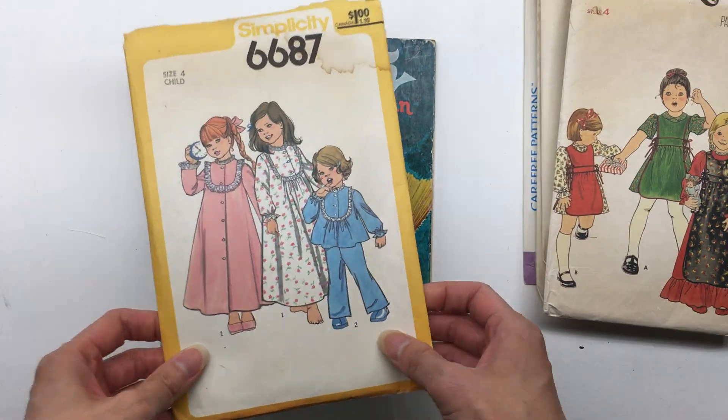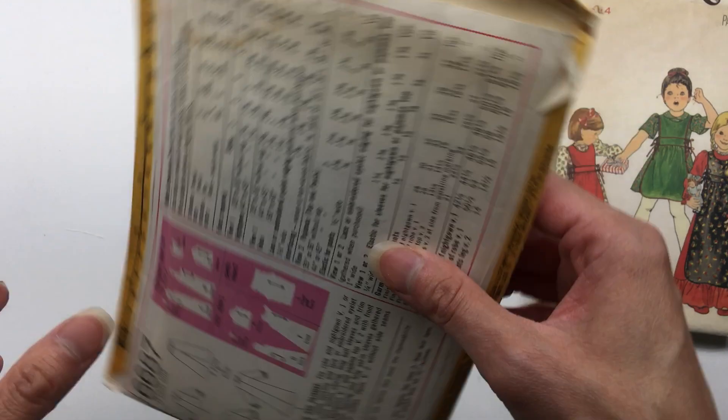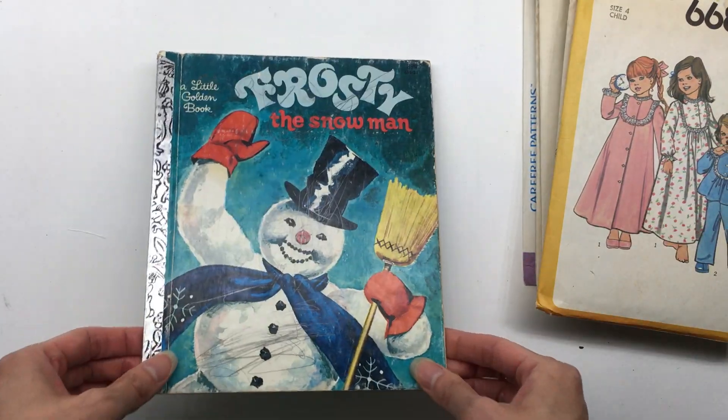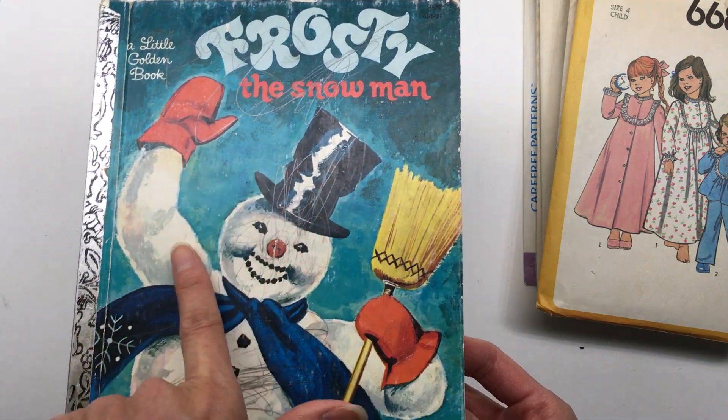Pajamas here, this is 1977. And then I found this golden book and did not realize it had so much scribbling on there, but it is pencil so I'm gonna try to clean it up.